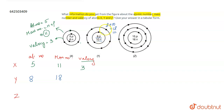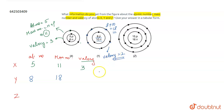Talking about the valency of Y: it consists of six electrons in its valence shell and needs two more electrons to complete its noble gas configuration. Therefore, the valency of Y is two, because gaining two electrons will complete its noble gas configuration.